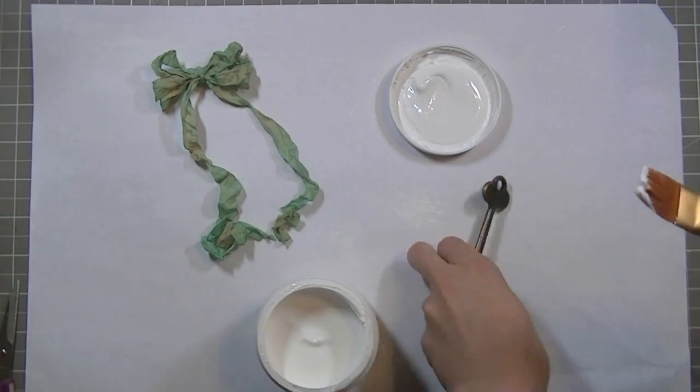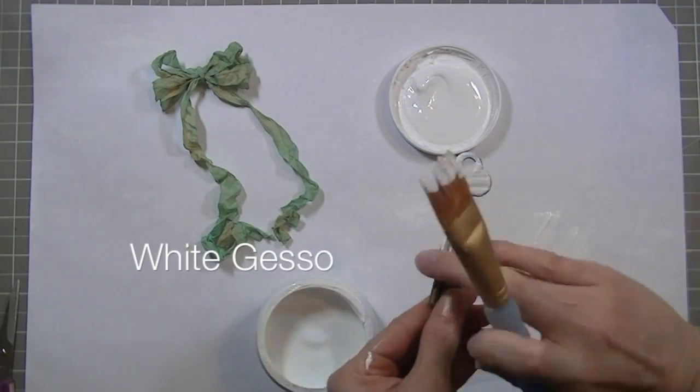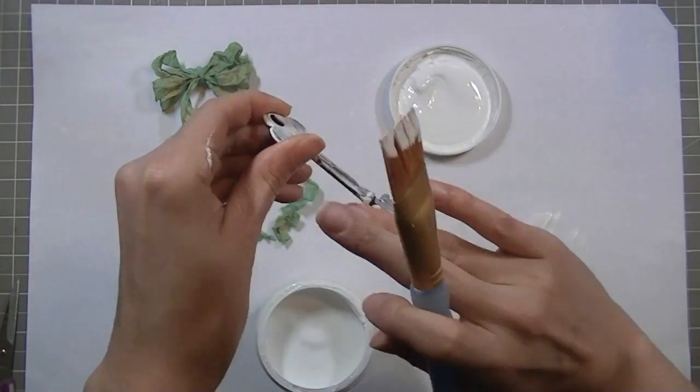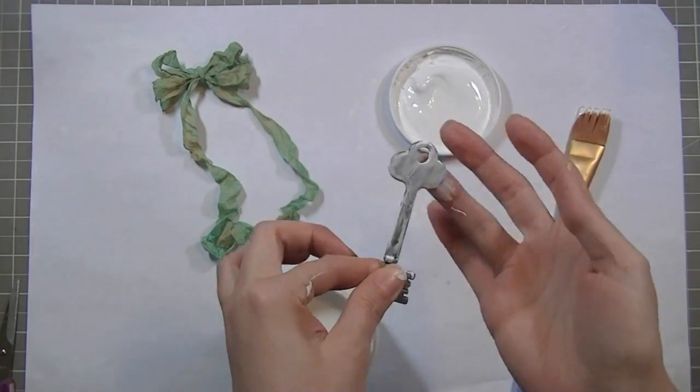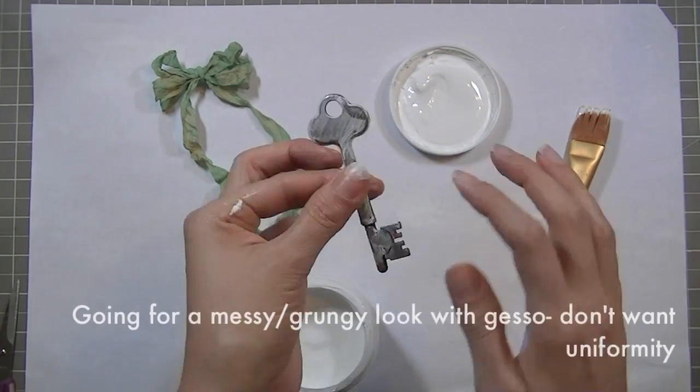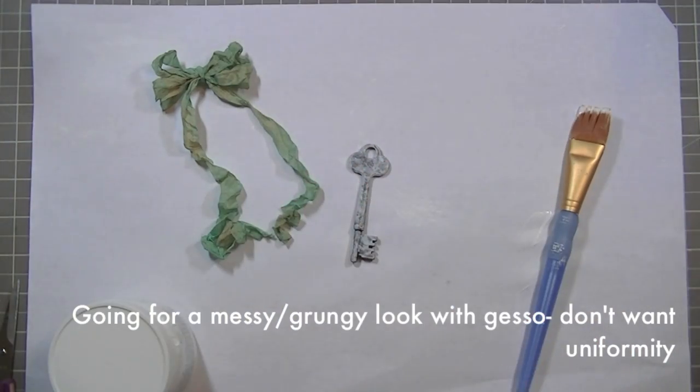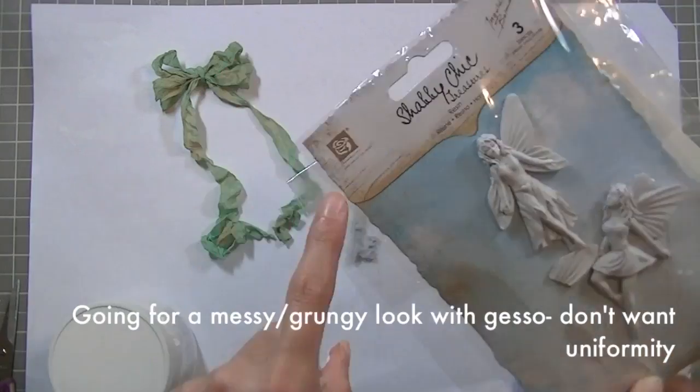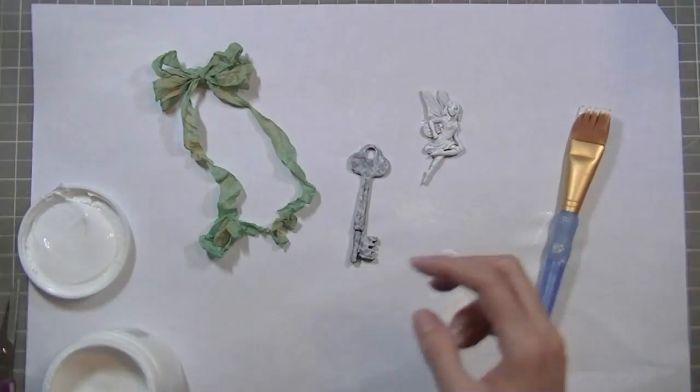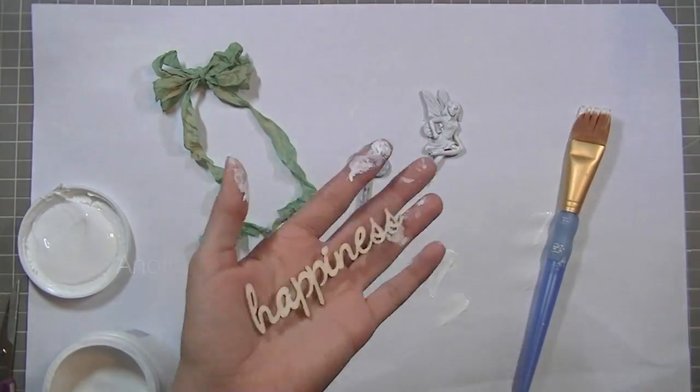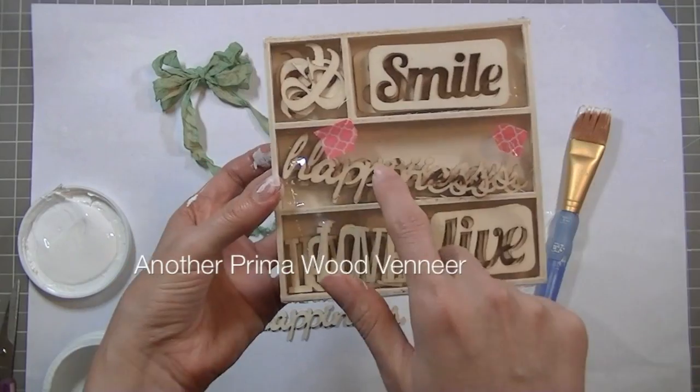Now I'm taking some white gesso and I'm going to cover this Tim Holtz key. And the reason why I'm doing this is because I didn't want that color on my layout. I'm going for more of a grungy messy look so I'm just dabbing it with my finger just so it's not uniform.